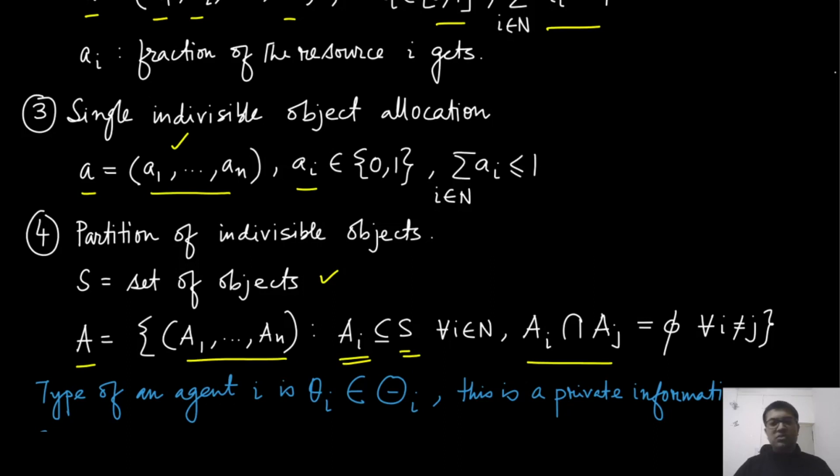It is not necessary that this A should cover the whole of S. So that way it is not really a partition, it is just an allocation, disjoint allocation of these objects.